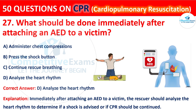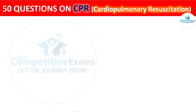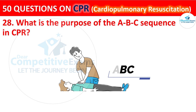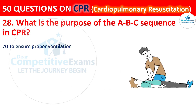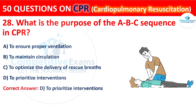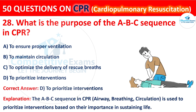What should be done immediately after attaching an AED to a victim? The rescuer should analyze the heart rhythm to determine if a shock is advised or if CPR should be continued. Question 28: What is the purpose of the ABC sequence in CPR? The options are: to ensure proper ventilation, to maintain circulation, to optimize the delivery of rescue breaths, or to prioritize interventions. The correct answer is D — to prioritize interventions. The ABC sequence in CPR (airway, breathing, and circulation) is used to prioritize interventions based on their importance in sustaining life.